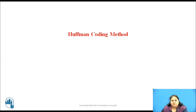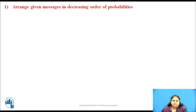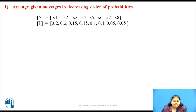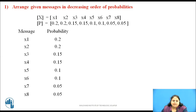Let us solve this first using Huffman coding method. The first step is to arrange the messages in the decreasing order of their probabilities. These are the given messages with their probabilities, and after arranging, this is the sequence that we get.